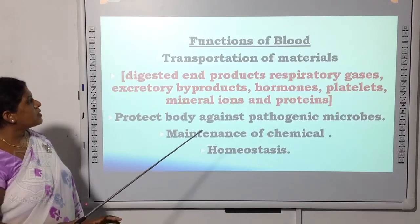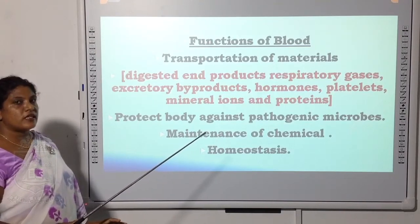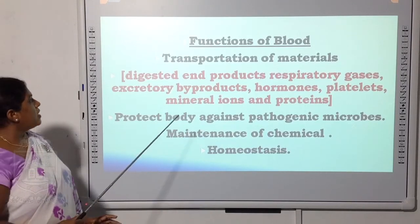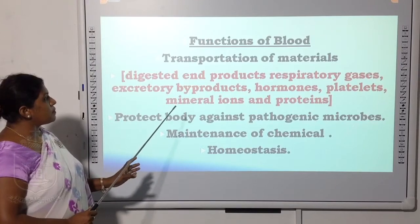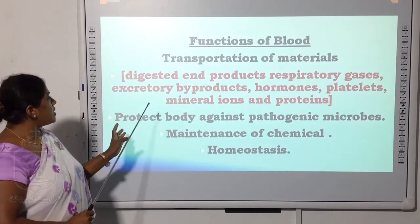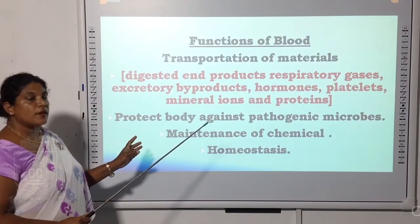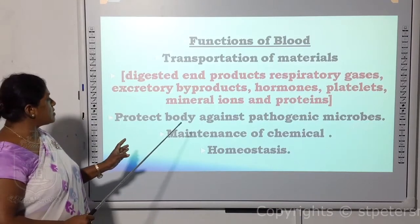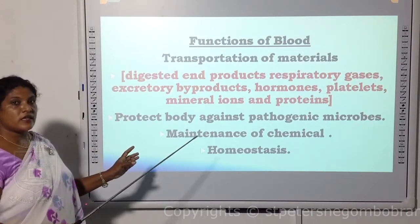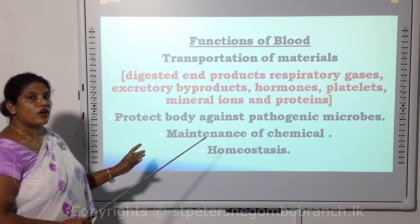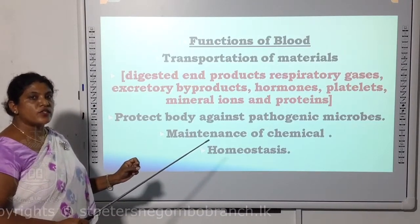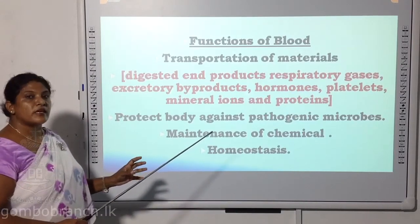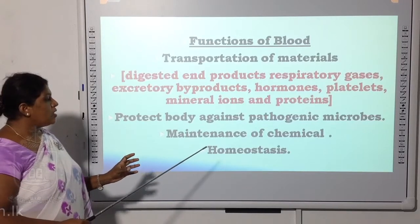The functions of blood include transportation of materials — acting as a medium for nutrients, waste products, and gases. This includes digested end-products, respiratory gases, excretory by-products, hormones, platelets, mineral ions, and proteins. Blood also protects the body against microbes through phagocytosis, and it is involved in the maintenance of chemical balance in the body — homeostasis.